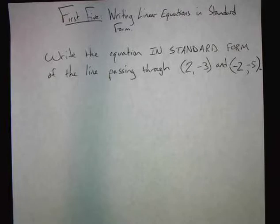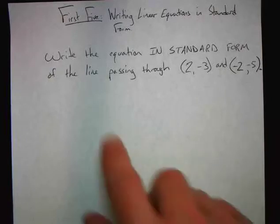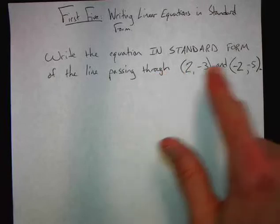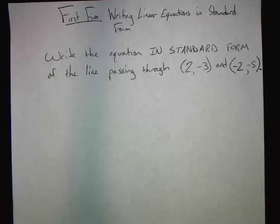Now we're going to put together pretty much everything we know about writing linear equations. This is a big deal. I'm going to show you two different methods to write linear equations. The first method uses slope-intercept form. The second method uses point-slope form. When we're finished, we're going to make sure the equation is in standard form.